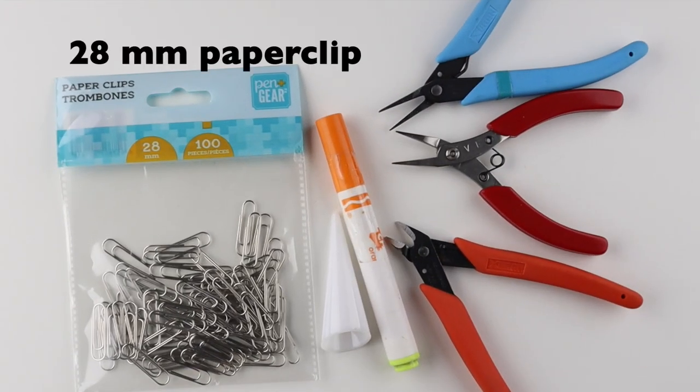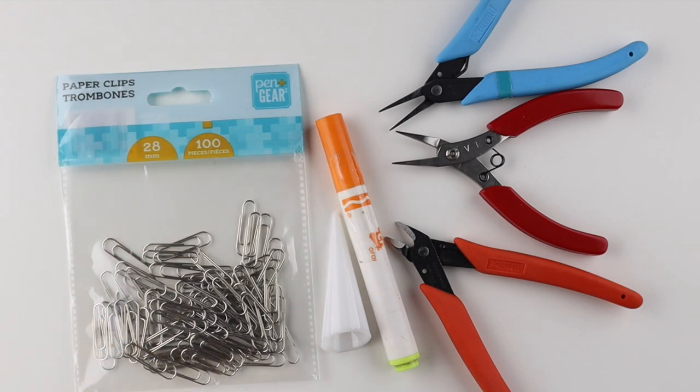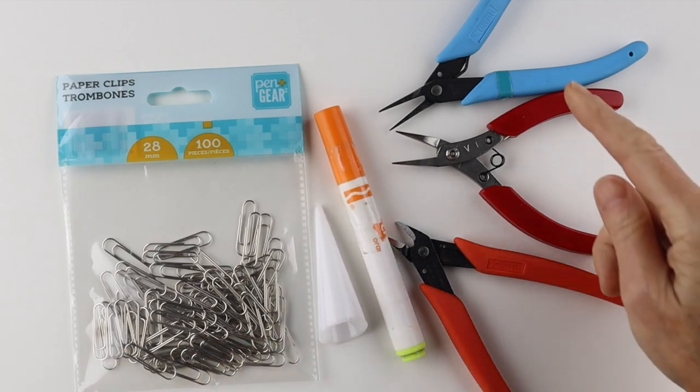For the paperclip rings, I use the 28mm regular sized paperclip. You need a round form, so a marker or a ring cone, and your tools.